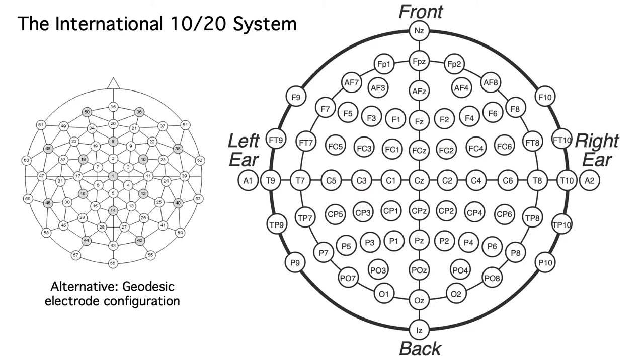Some EEG recording systems don't use the 10-20 system. Instead, they use a geodesic configuration that guarantees an equal spacing between each adjacent pair of electrodes. These layouts use idiosyncratic numbering systems, and a publication will typically say something like, these are data from electrode 27, which is near the P2 location in the International 10-20 system.